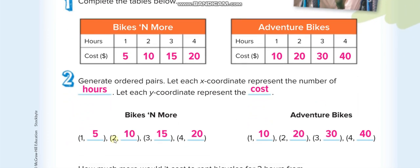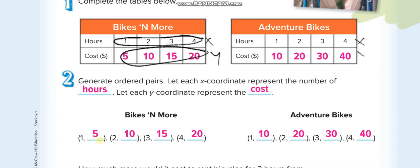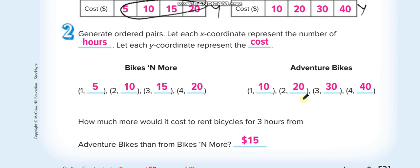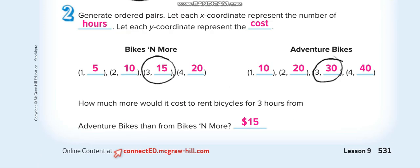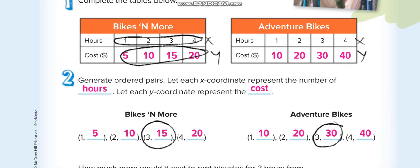We make the ordered pairs with X and Y. The first column represents the X-axis and the second represents the Y-axis. For Bikes and More: one and five — so X is one, Y is five. For Adventure Bikes: one and ten. Now, how much more would it cost to rent a bicycle for three hours from Adventure Bikes than from Bikes and More? They charge thirty dollars versus fifteen dollars, so fifteen dollars more.